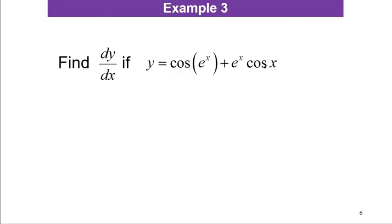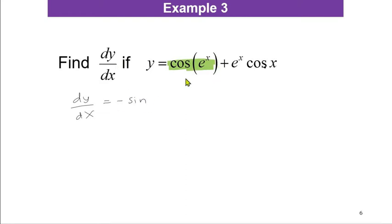Now let's try Example 3: find dy/dx if y = cos(x + eˣ cos x). To find dy/dx, first differentiate cos, giving negative sin, and the angle follows. So we get negative sin(x + eˣ cos x), and then we differentiate the angle (x + eˣ cos x).